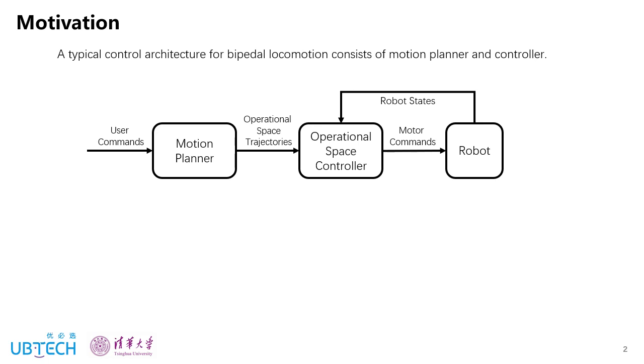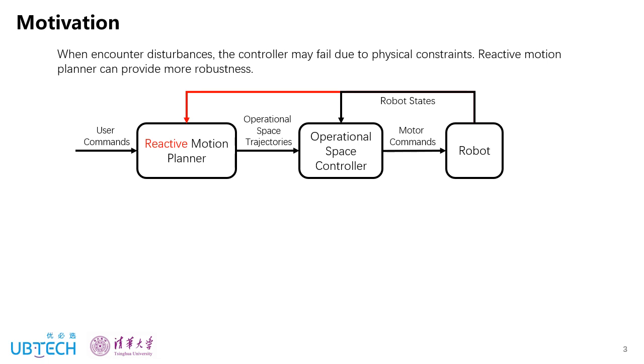For Bipedal Locomotion, a typical control architecture consists of a motion planner and feedback operational space controller. So the stability of the robot heavily relies on the performance of this controller. However, when encounters disturbances the controller may fail due to the physical constraints of actuators or ground reaction force. In this situation, a reactive motion planner that can update the motion plan according to current robot states is needed to provide more robustness.